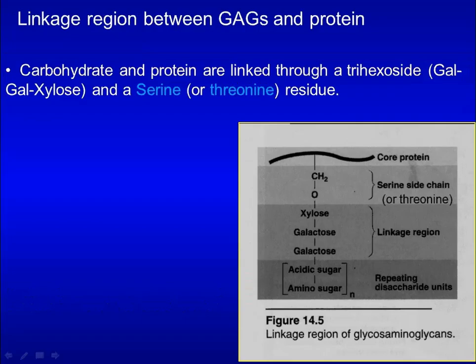In a proteoglycan, carbohydrates and protein are linked through a trisaccharide and a serine or threonine residue. The trisaccharide is made up of galactose, galactose, and xylose.